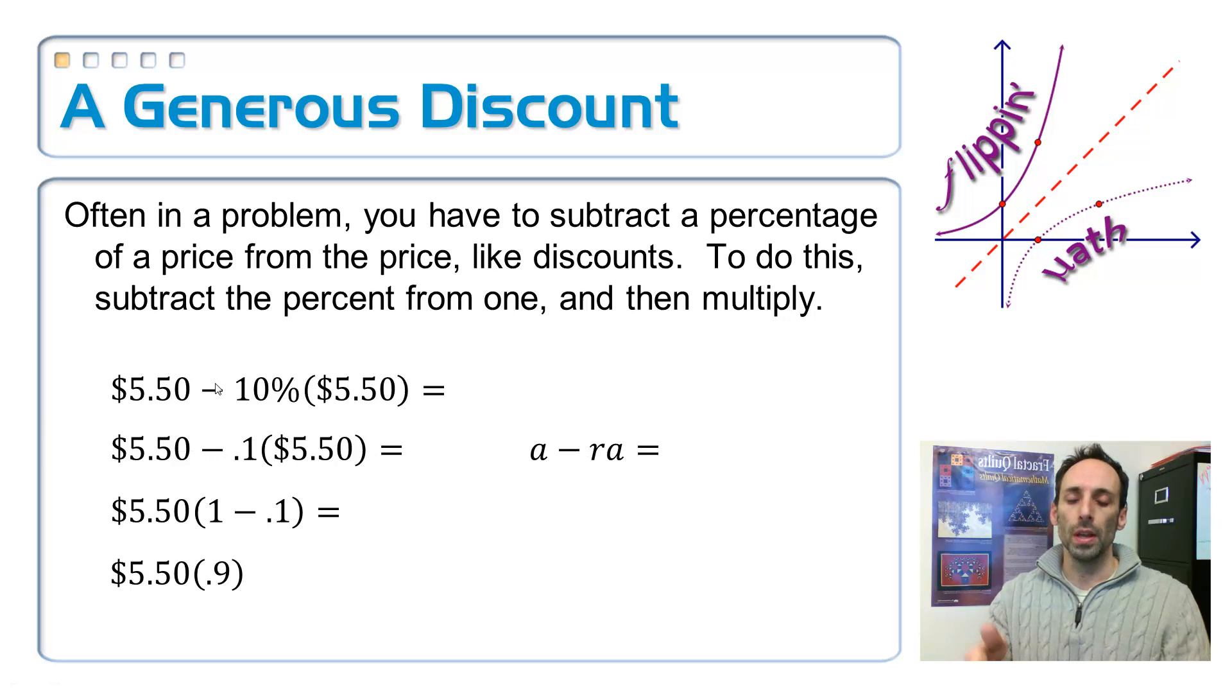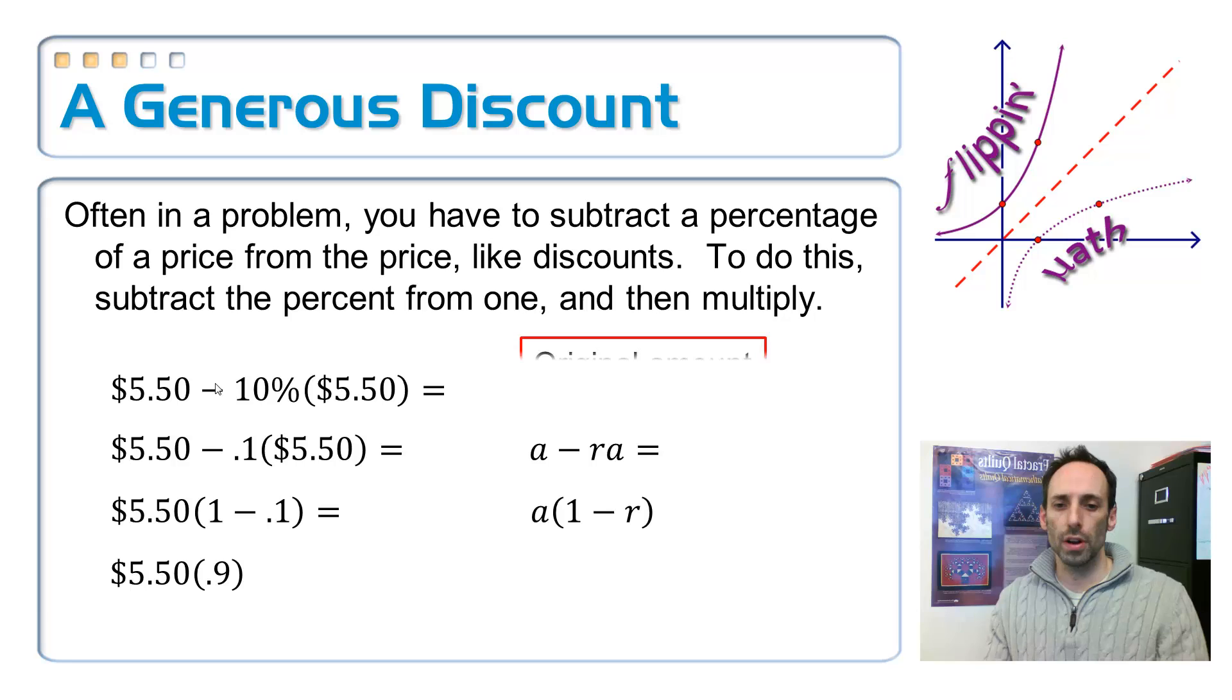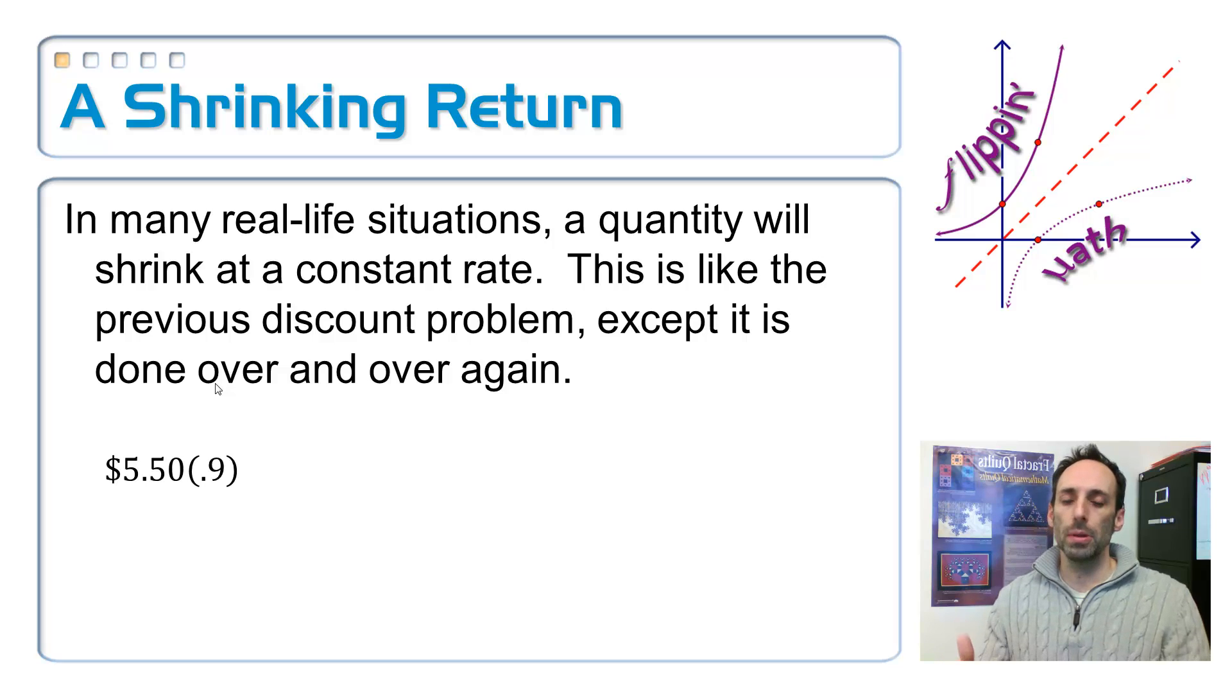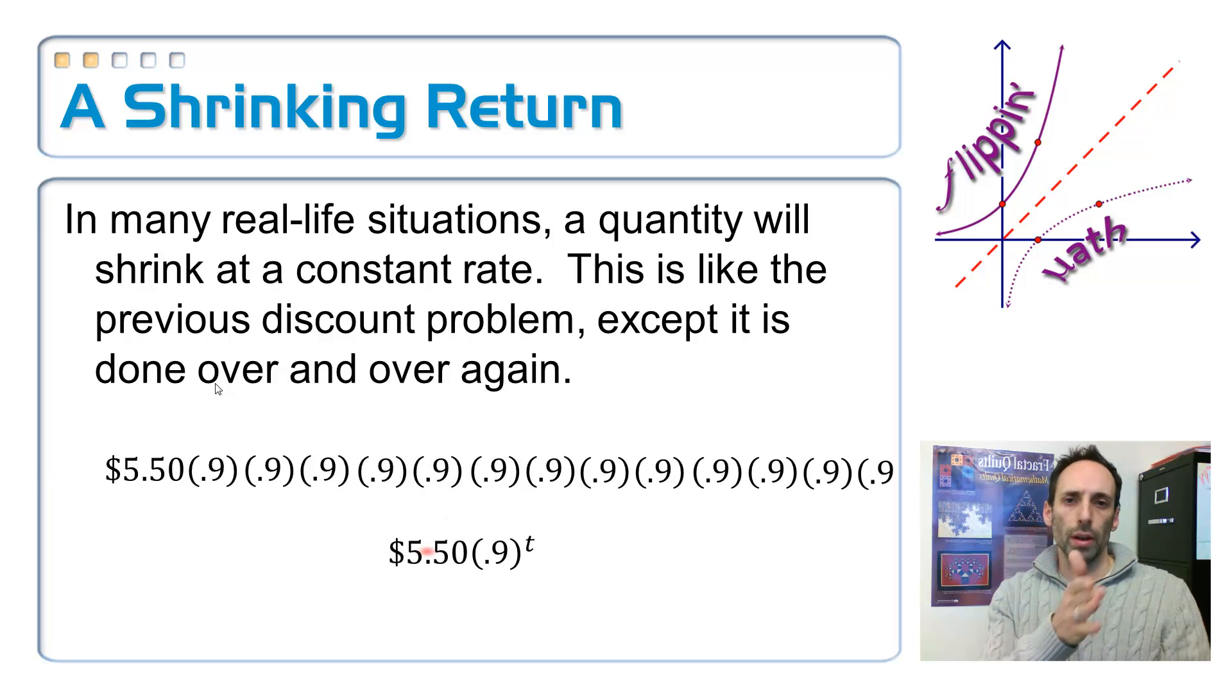Here it is in general. Just like before, I'm starting off with the original amount, then I'm subtracting off the percentage times the original amount. You can factor out the A, and you're left with 1 minus R in the parentheses. So still, A is our original amount, and 1 minus R, this time it's 1 minus the rate. Think of something that's getting smaller. I'm taking 10% away, just keep taking 10% away. I'd have that times 0.9 times 0.9, keep taking away 10% every single time.